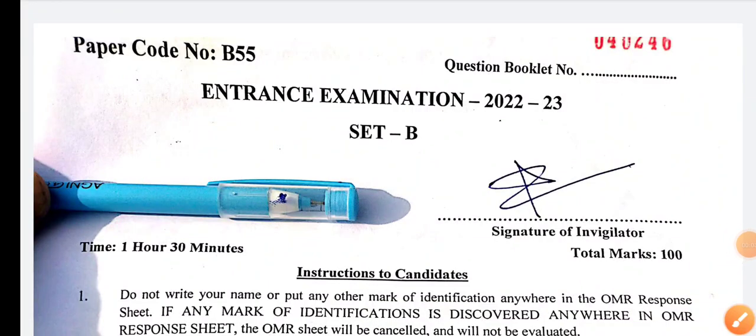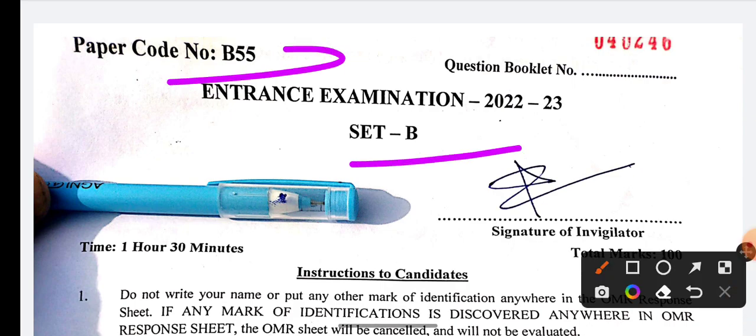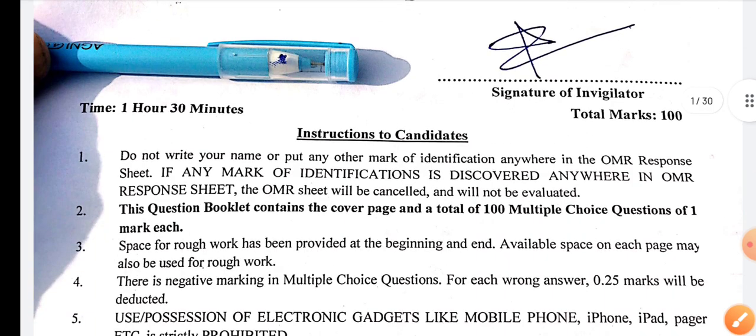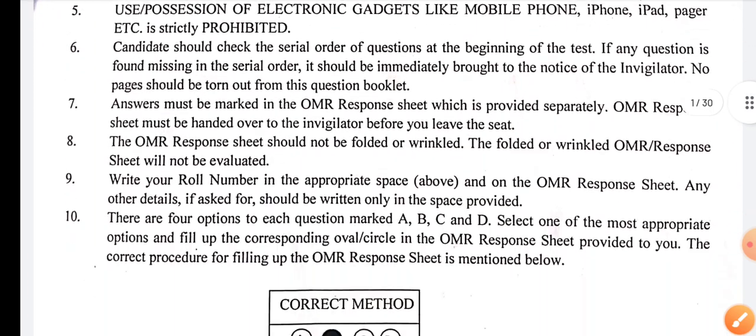Hello everyone, this is Students Info. In this video, we will discuss the BA Honors Geography exam paper, Set B, for Geography, Sociology, and Psychology 2022. Today's date is 25th June.